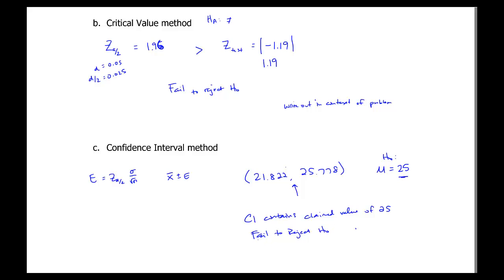So same three ways to solve the problem. The conclusion to fail to reject the null hypothesis is the same for all three. And then the sentence or two that you write in the context of the problem would be the same as well.